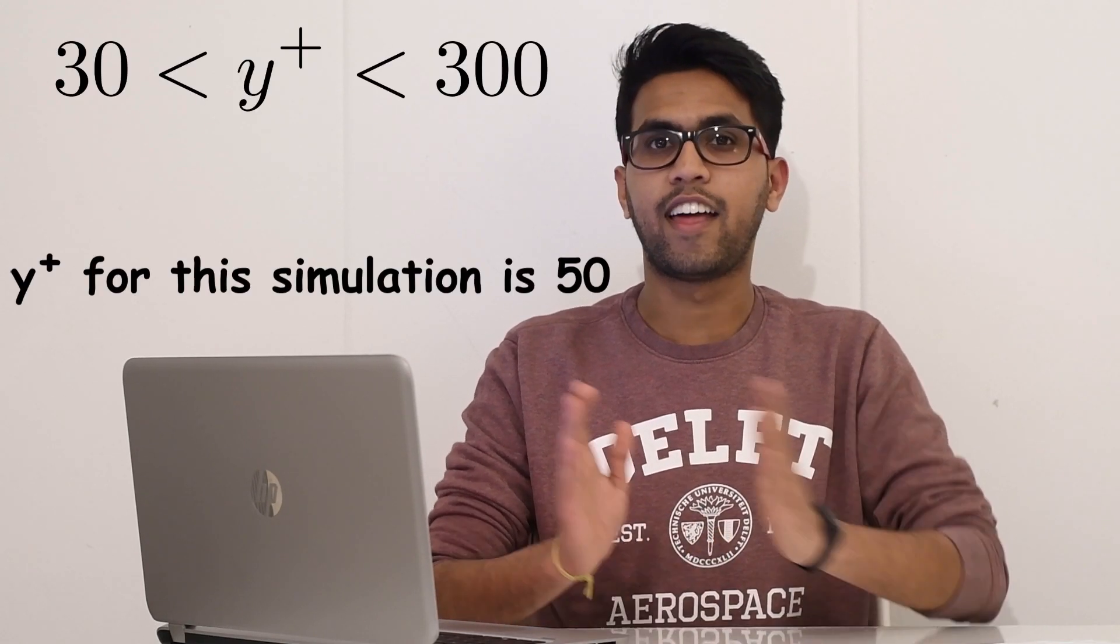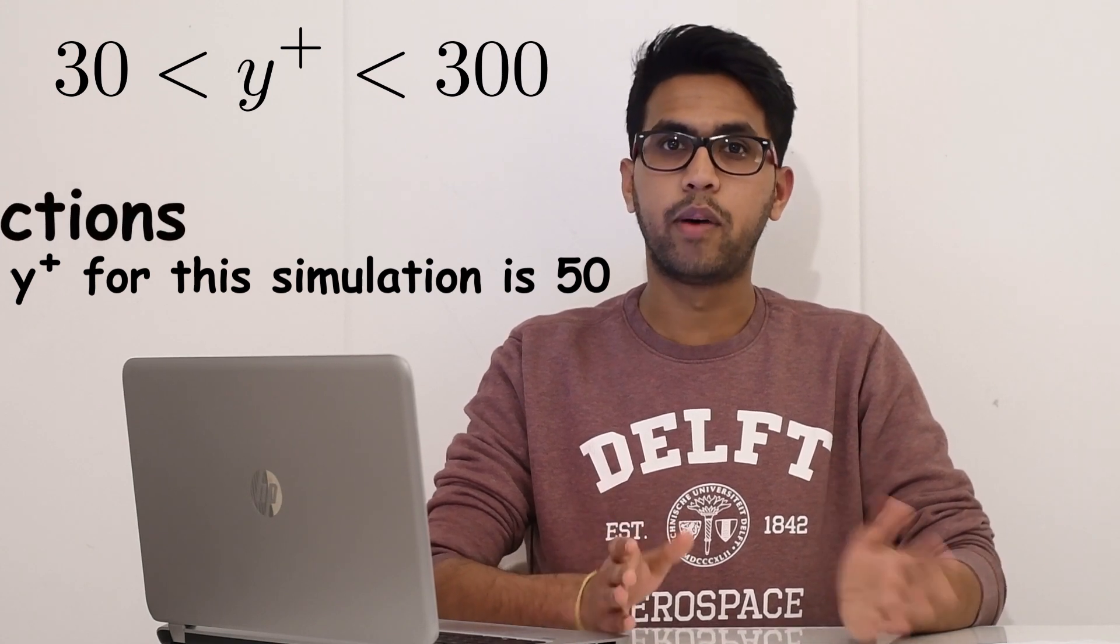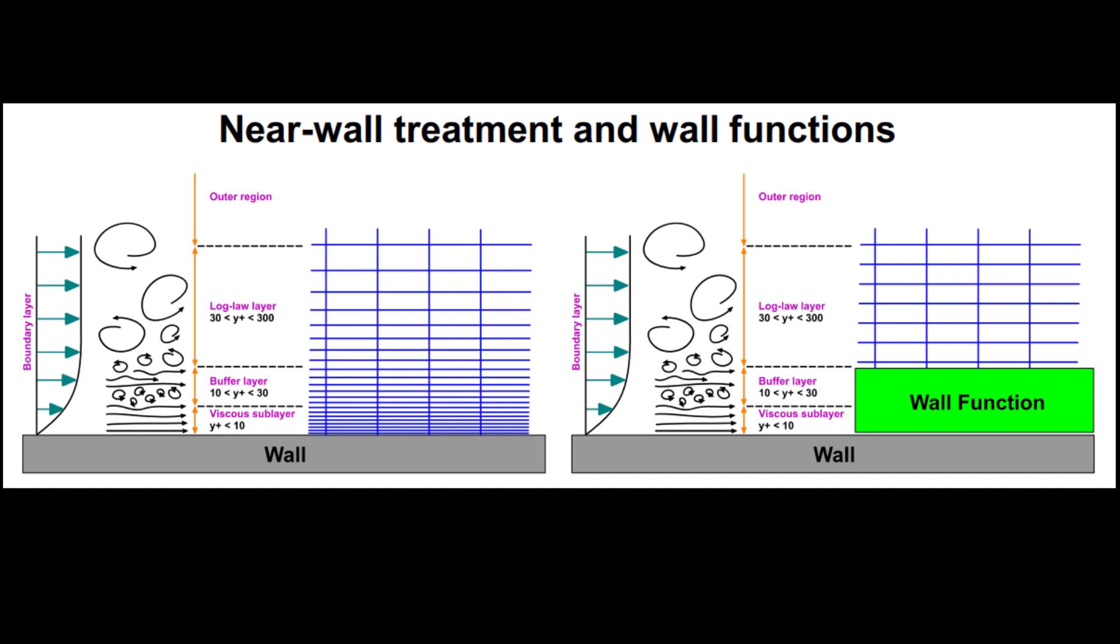The other option is to have a Y+ between 30 and 300. This means that your boundary layer is not resolved. But in this case, we use wall functions. So when you don't have a Y+ around 1, you are essentially losing information in the boundary layer. This information is captured using wall functions.